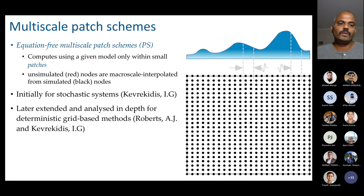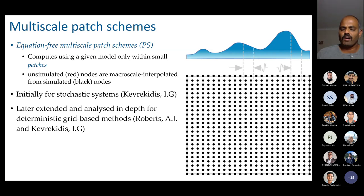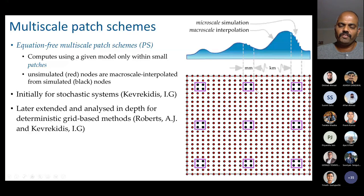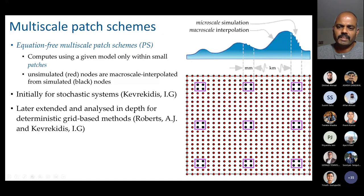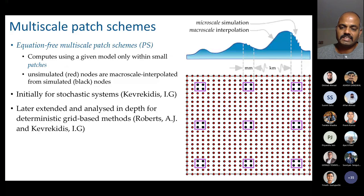In the multi-scale patch schemes, instead of computing on all nodes, the patch scheme computes only on a very sparse subset of nodes. These nodes where the patch scheme computes are typically separated by kilometers, while the computation within the patches happens in a very small fraction of the space. That is how patch schemes achieve their computational advantage.